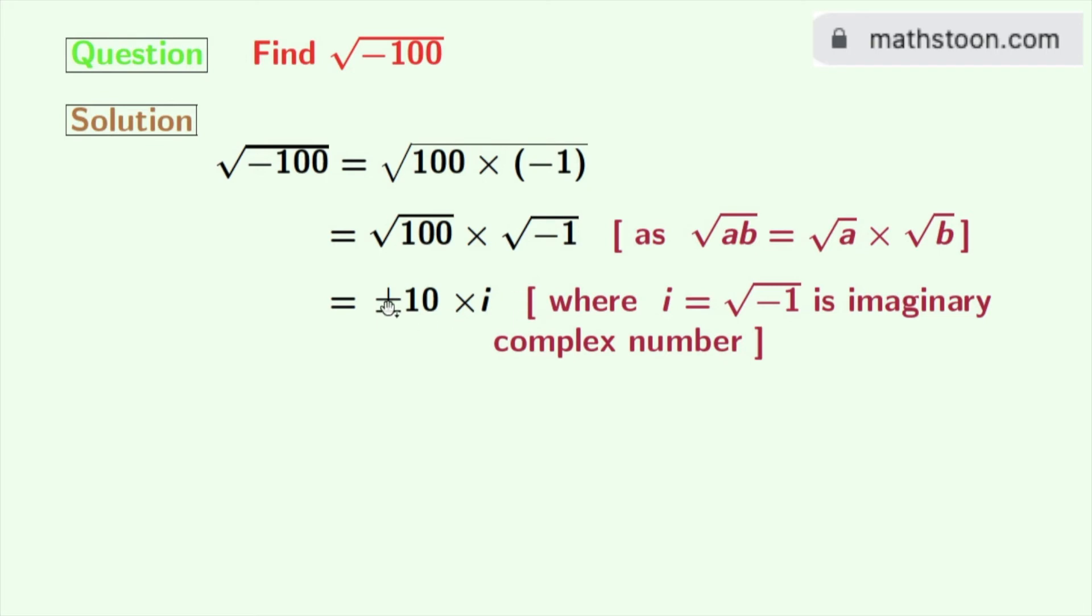Now after multiplication we get plus minus 10i. So finally we get square root of minus 100 is equal to either 10i or minus 10i, and this is our final answer.